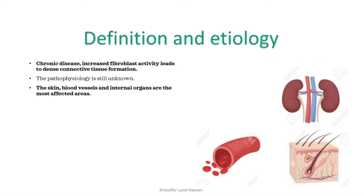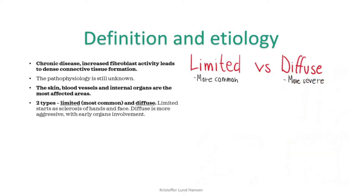The skin, blood vessels and internal organs, especially the heart, lungs and kidneys, are the most affected components. It can be divided into two forms: limited and diffuse. The limited form is the more common variant and often starts with sclerosis, as in stiffening of the skin in the hands or face, and it later proceeds towards the trunk. The diffuse variant is more aggressive and starts quite early on with the involvement of internal organs.